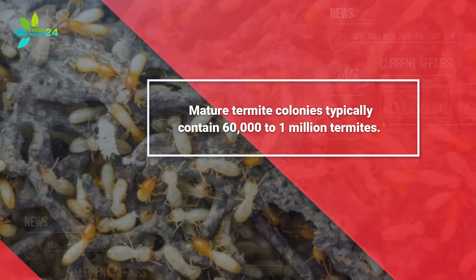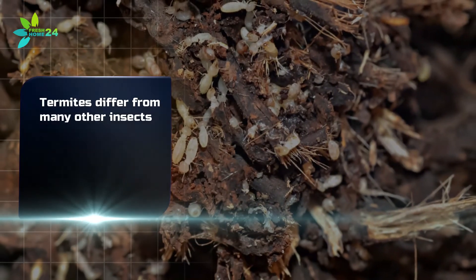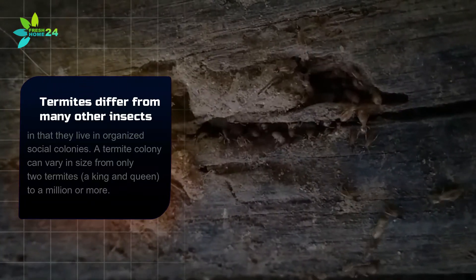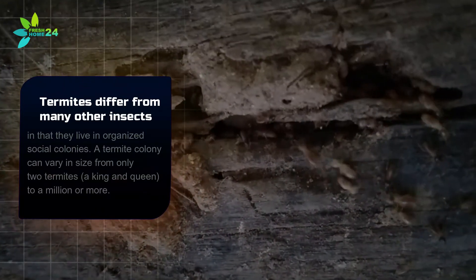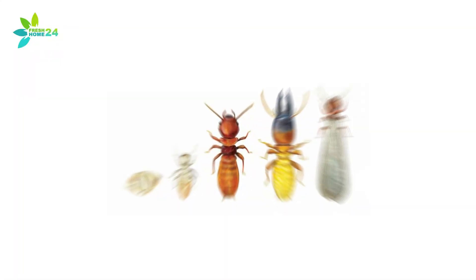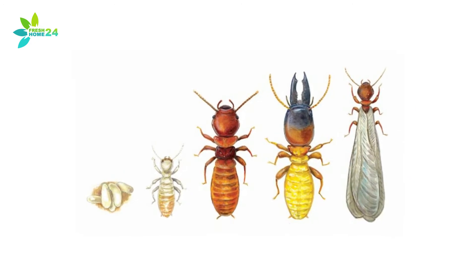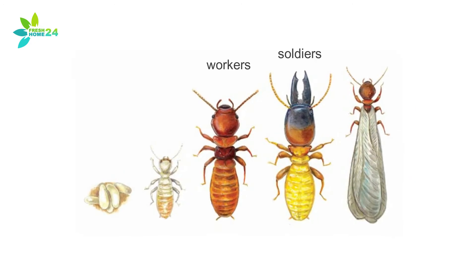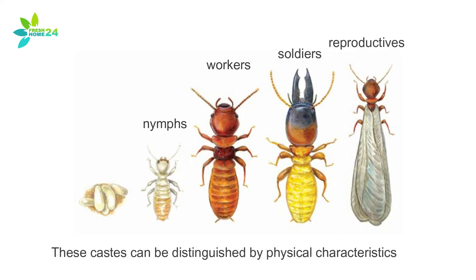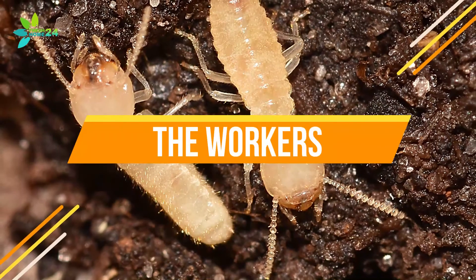Mature termite colonies typically contain 60,000 to 1 million termites. Termites differ from many other insects in that they live in organized social colonies. A termite colony can vary in size from only two termites — a king and queen — to a million or more, depending on the species. A colony will contain several forms or castes, including immature termites, workers, soldiers, nymphs, and reproductives. These castes can be distinguished by physical characteristics.